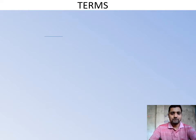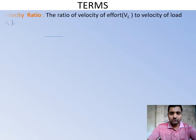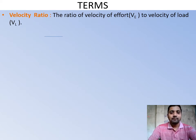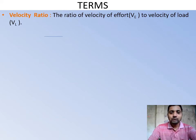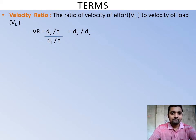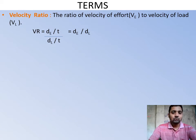Velocity ratio — as the term suggests — is the ratio of the velocity of effort to the velocity of load. Velocity means displacement travelled per unit time. So velocity due to effort divided by velocity due to load — that is, how much distance is travelled on the effort side divided by how much distance is travelled on the load side. The formula is: VR = (d_E / t) / (d_L / t). Since the time for effort and time for load movement is the same, the time cancels out.